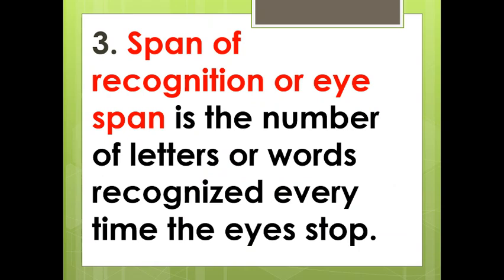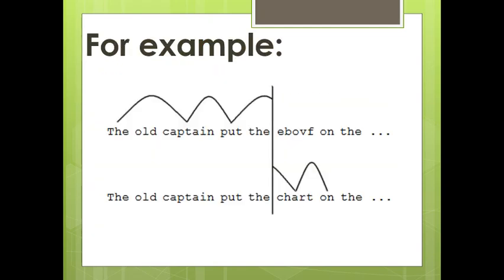Third, span of recognition or eye span is the number of letters or words recognized every time the eyes stop. For example: 'The old captain put the chart on the...' When we say eye span, it is when our eyes recognize a group of words, because usually when we read, we do not read word for word. Instead, we read by group of words or by phrase or clause.